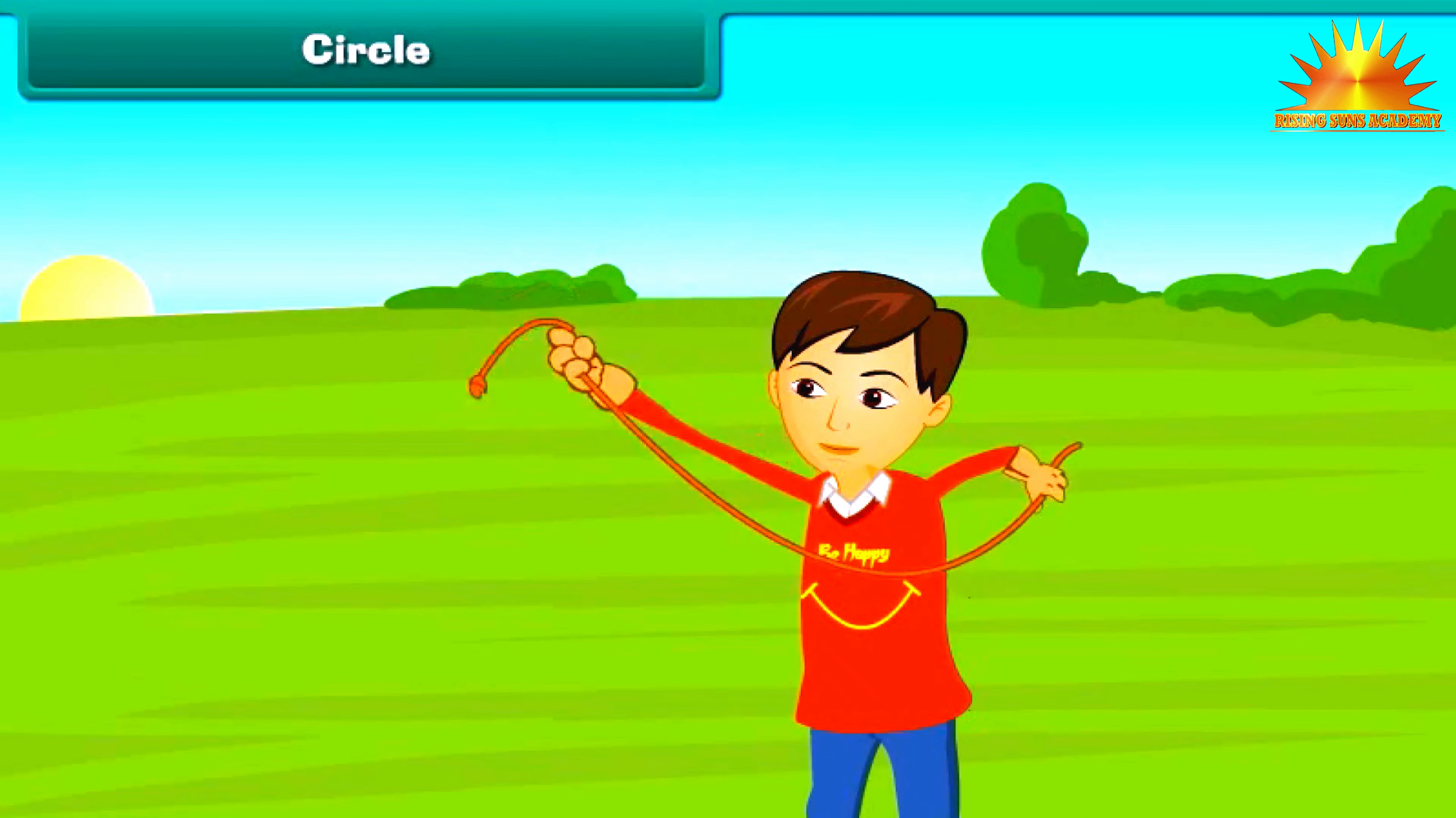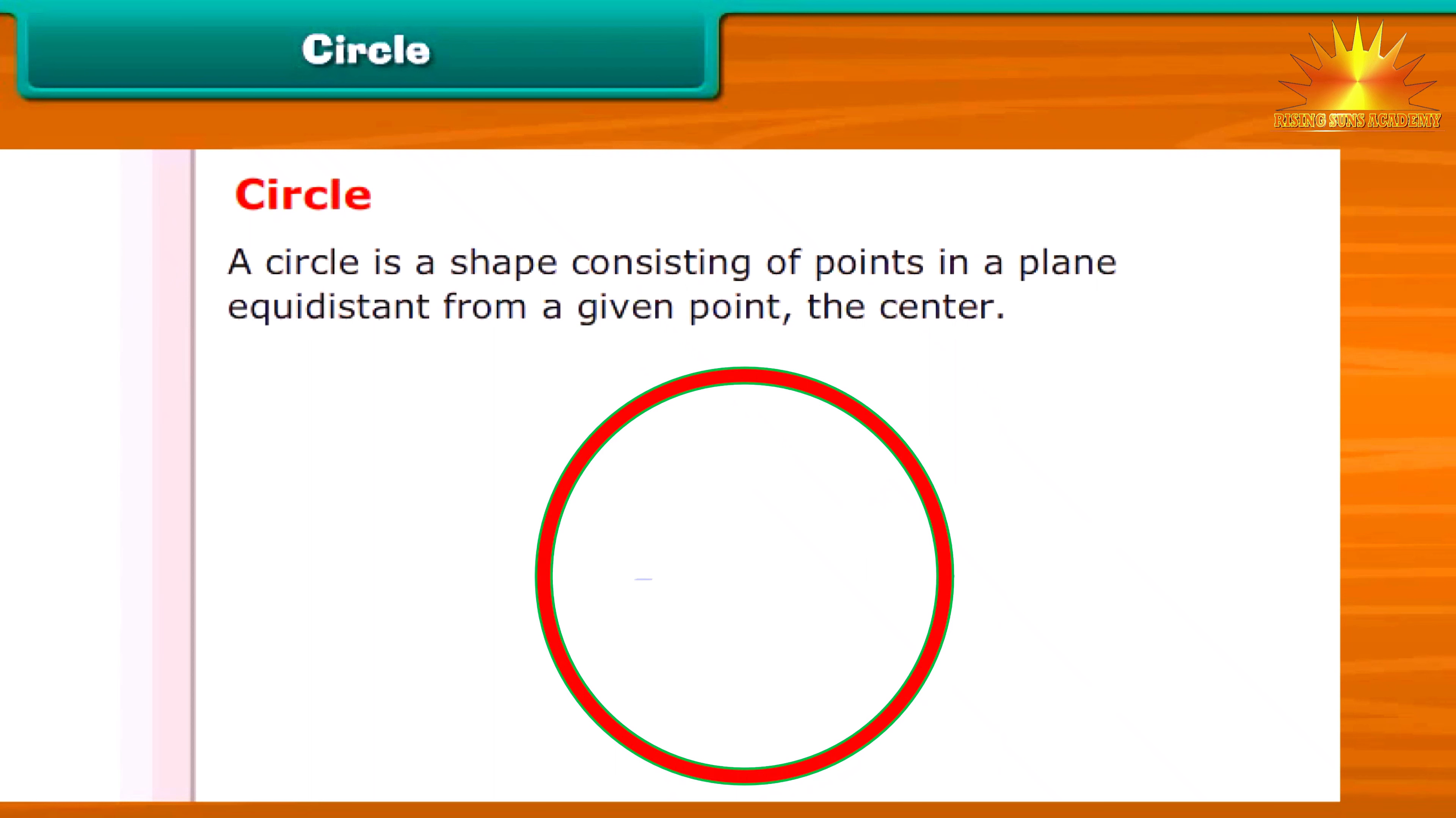Look what Sahil is doing. He is rotating the rope in the air. What shape the knot at the end of the rope is forming? It is circle. A circle is a shape consisting of points in a plane equidistant from a given point, the center.